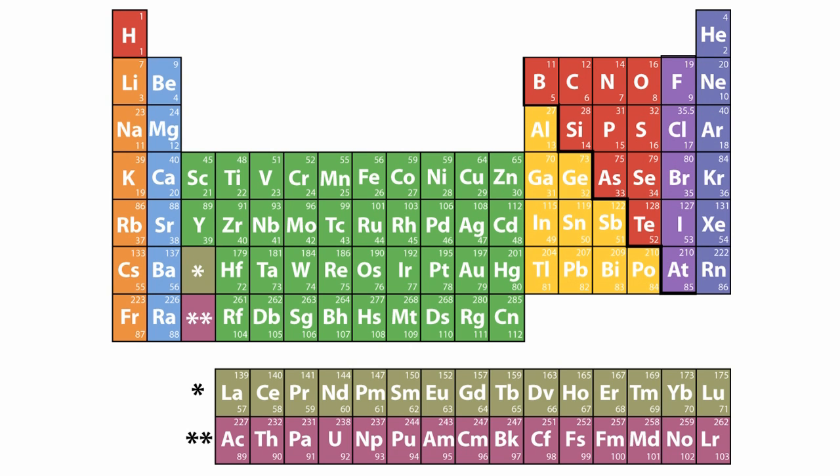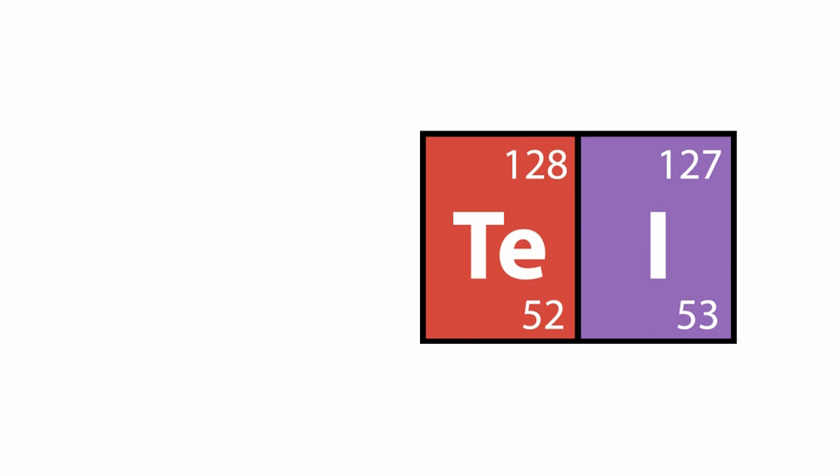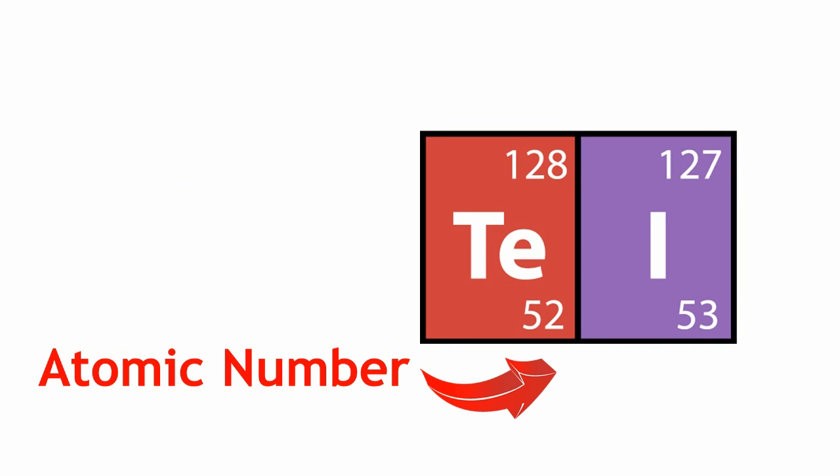In the modern periodic table, where the elements are ordered by their atomic number, tellurium, which has an atomic number of 52, would be put before iodine, which has an atomic number of 53, so they fit into their correct positions without breaking any rules.